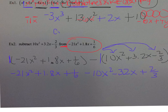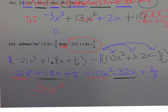Now we combine like terms. Negative 21x squared minus 10x squared — signs are the same — gives negative 31x squared. Then positive 1.8x minus 3.2x: use your calculator, or work it on the side, and we get negative 1.4x. And then 1.6 plus two-thirds: get the same denominator, and we get positive five-sixths.